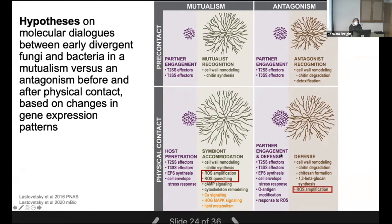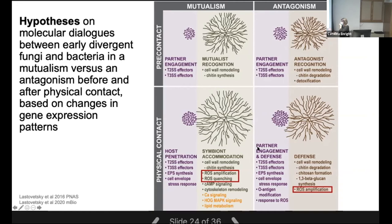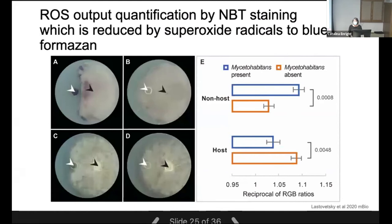These pre-contact responses foreshadow what happens during contact: cell-wall-encoding genes are expressed across a full spectrum. In addition, reactive oxygen species come into play. The non-host produces a potent reactive oxygen burst, while the host produces a low peak of reactive oxygen species followed by quenching. Bacteria on their part pump effectors into the host and upregulate stress response mechanisms in response to the non-host. The reactive oxygen hypothesis was the one we actually tested, and indeed confirmed using nitro-blue tetrazolium staining — visually and quantitatively showing the non-host responds with a potent burst.